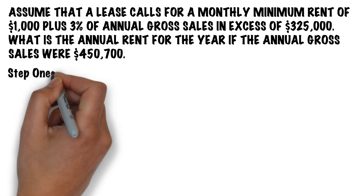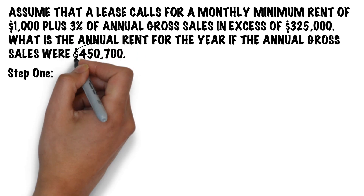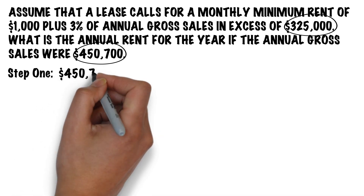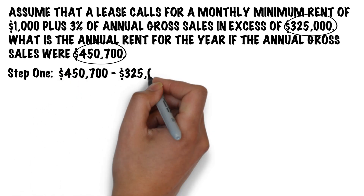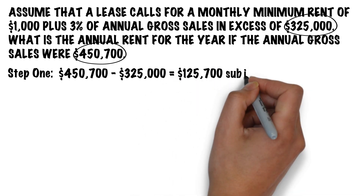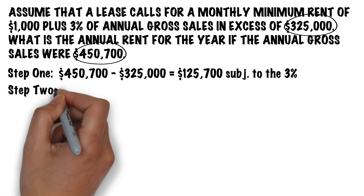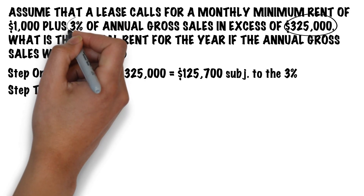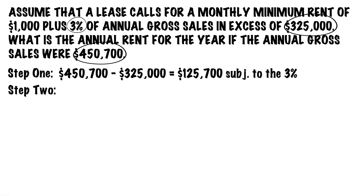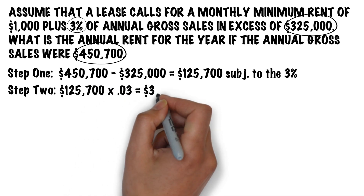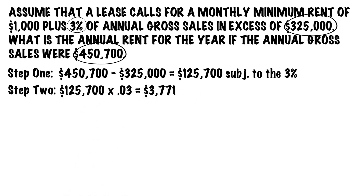The first step is to determine how much of gross sales are subject to the 3% charge. To do that, we take the total annual gross sales of $450,700 and subtract the sales threshold of $325,000 to get a total of $125,700 that's going to be subject to the 3% charge. The next step is to take the $125,700 and multiply it by 3%, or 0.03, for a total additional annual rent charge of $3,771.